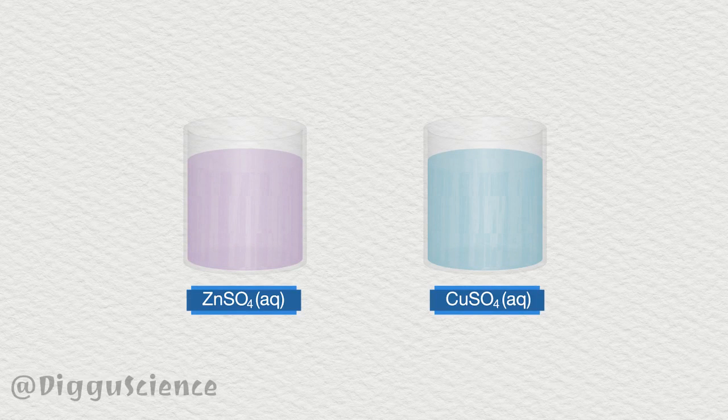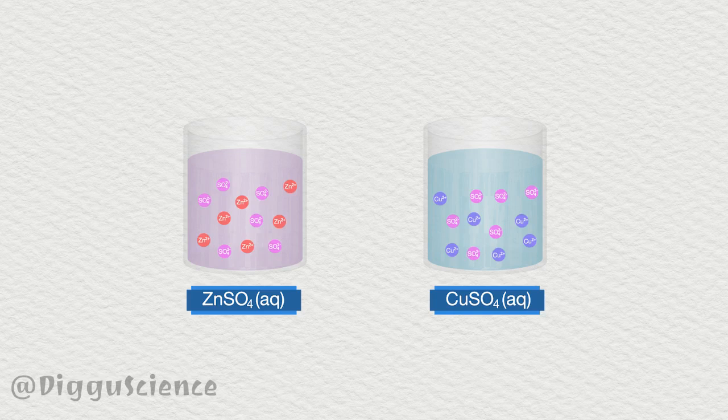Below is a chemical tube containing a solution of zinc sulfate and copper sulfate. This solution is an electrolyte. In water, solute molecules are dissolved in the form of ions: copper ions, zinc ions, and sulfate ions.